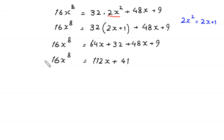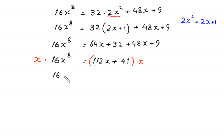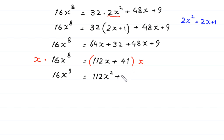From here, we multiply both sides of this equation by x. At the right side we multiply by x. So x times 16x to the power 8 gives 16x to the power 9 equals 112x squared plus 41x.